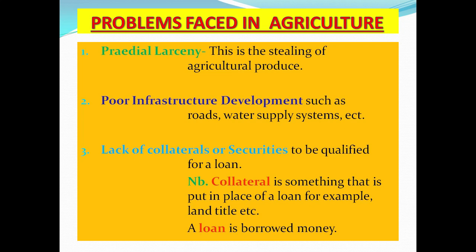Number two: poor infrastructure development, such as roads and water supply systems. Agriculture cannot be practiced without water supply. For commercial farming, vehicles are needed to alleviate transportation challenges. Infrastructure development is very essential to the success of agriculture.